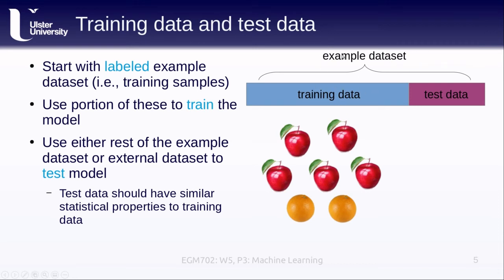The test data should have similar statistical properties to the training data. One very common approach here is to take the entire example data set and take a random sample of usually about 70 percent and use that for our training data, and then the remaining 30 percent is used for the test data.